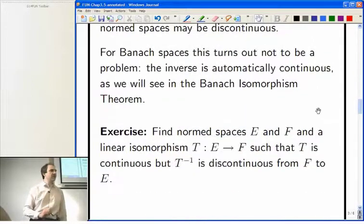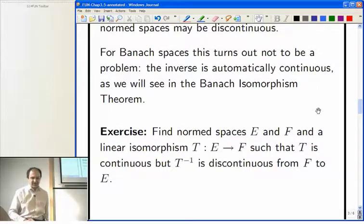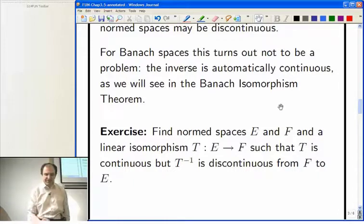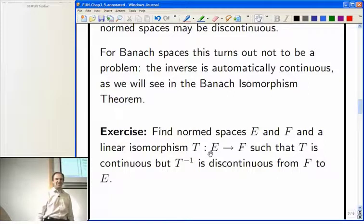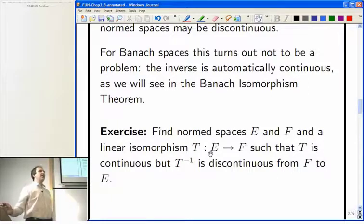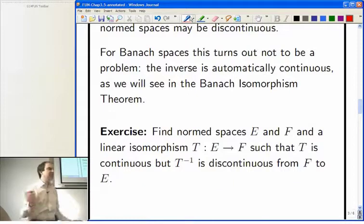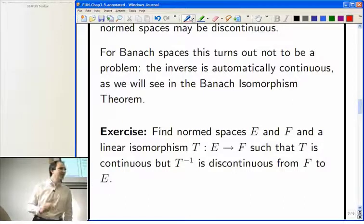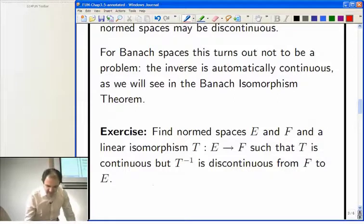So, here's an exercise for you. It's define two norm spaces, and this is on a question sheet. Define two norm spaces and a linear isomorphism, which is continuous, but whose inverse is discontinuous. And you can't do this with finite dimensional spaces because all linear maps from a finite dimensional norm space, every linear map is continuous. So, you can't do it that way.